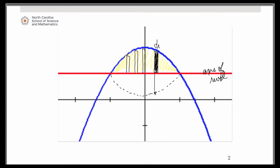We would be taking that representative rectangle and revolving it, flipping it around that axis of revolution. Therefore, it forms a disk.